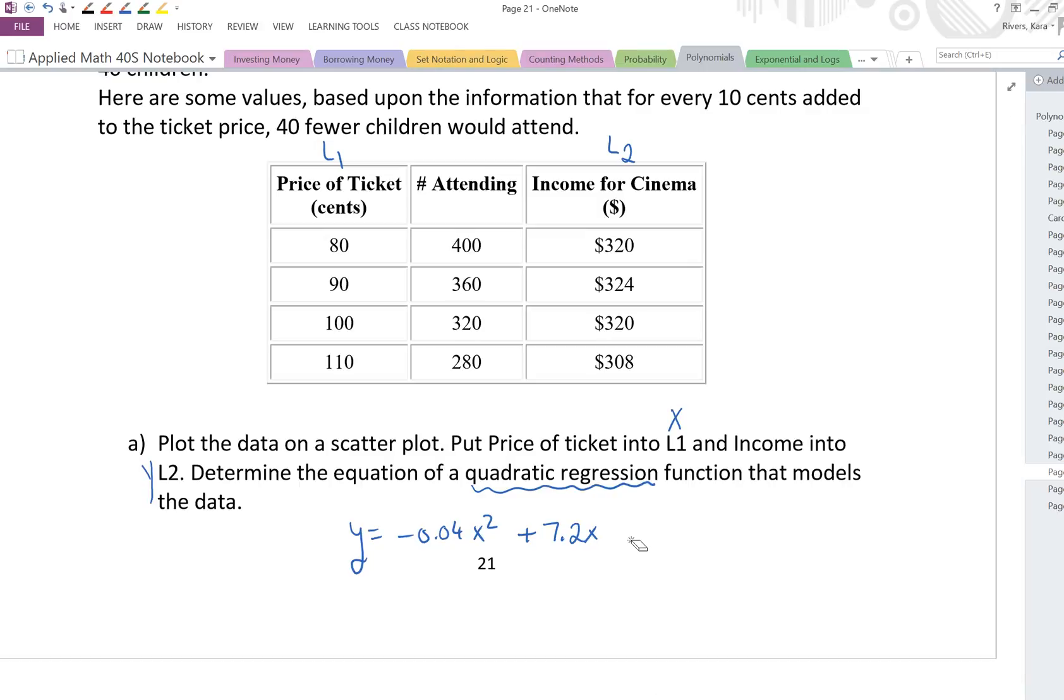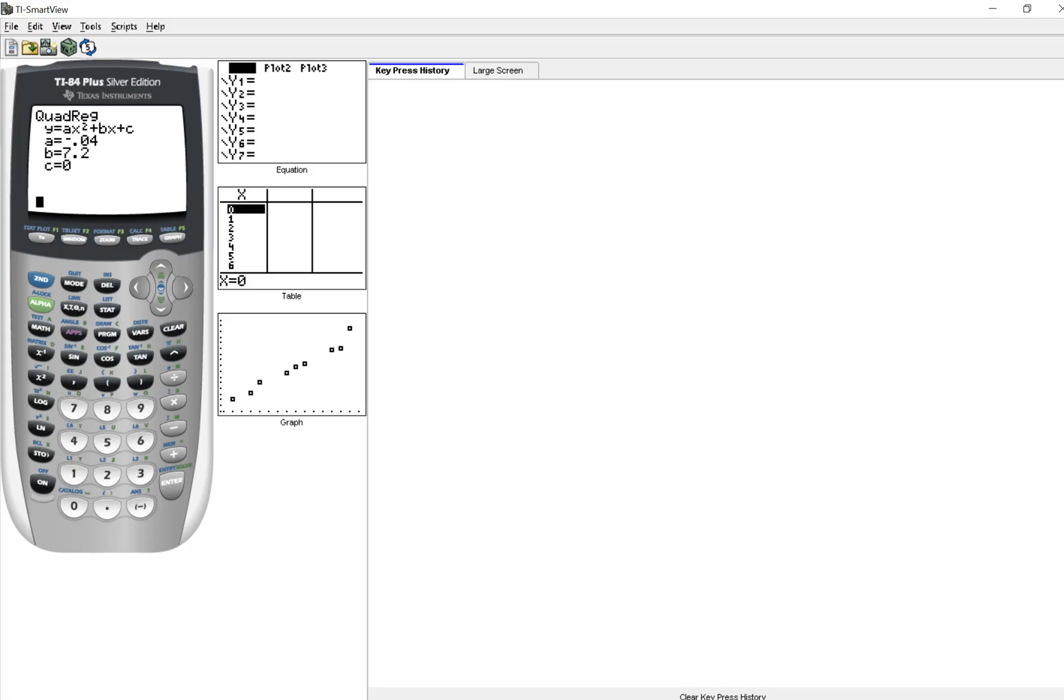Let's write this in on our notes. So there's our quadratic function. Now let's draw the curve of best fit in. So to do that, remember you go to y equals, make sure everything's cleared out in there. Vars 5 over to equation. Enter. And then hit trace or graph. And there's our curve of best fit.